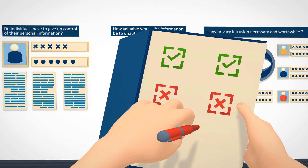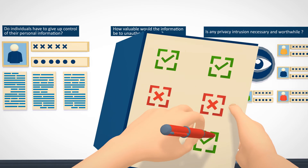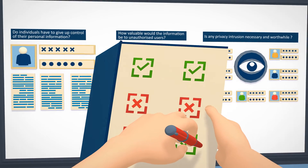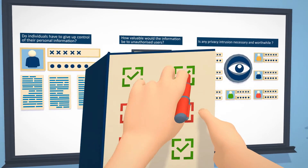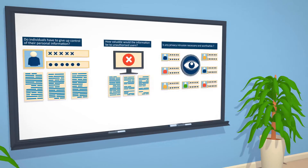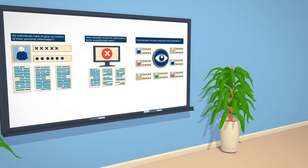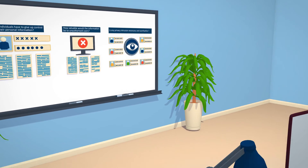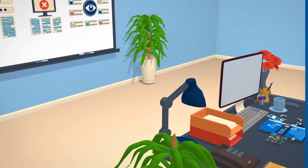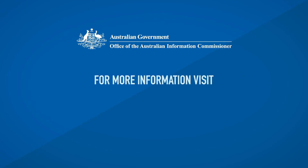In the next step in the PIA process, we consider strategies to address negative impacts you have identified in your impact analysis and compliance check.